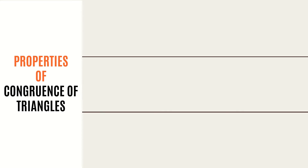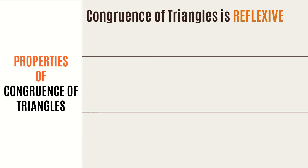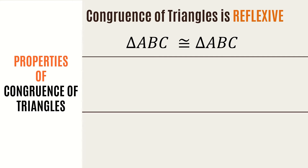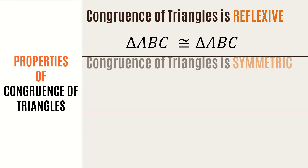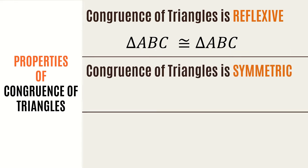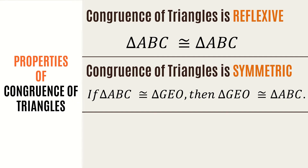Analogous to the properties of equality of real numbers, properties of congruence of triangles are stated. The first property is reflexive congruence of triangles: for every triangle ABC, triangle ABC is congruent to triangle ABC, or it is simply congruent to itself. The second property is congruence of triangles is symmetric: if triangle ABC is congruent to triangle GEO, then triangle GEO is congruent to triangle ABC.